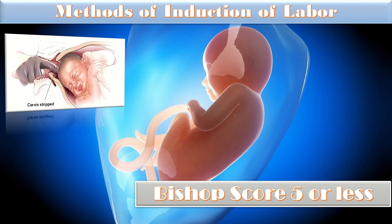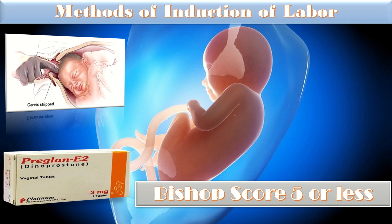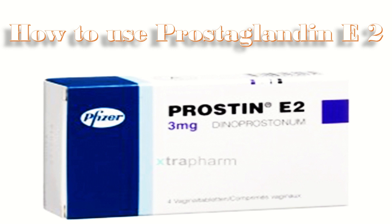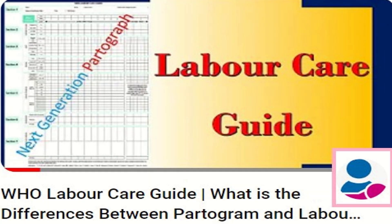If the Bishop score is 5 or less, options include membrane sweeping and stretching, prostaglandin E2 (available as Prostin/dinoprostone), or an intracervical catheter for multiparous patients. For prostaglandin E2: place 3 mg in the posterior vaginal fornix, reassess after 6 hours with fetal monitoring, and repeat 3 mg if needed. Reassess again after 6 hours; if the Bishop score remains poor, proceed to cesarean section. If the score has improved, a third dose may be given in selected cases with informed consent and vigilant monitoring. Once in labor, provide care according to the WHO Labor Care Guide.